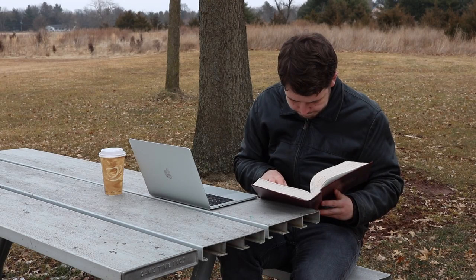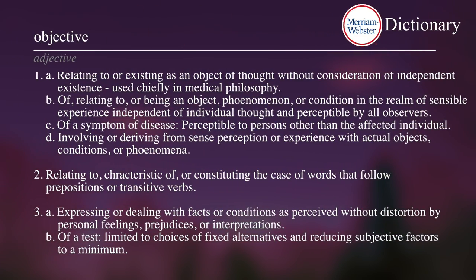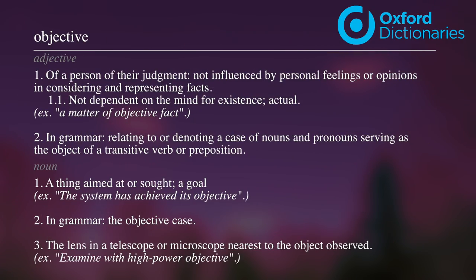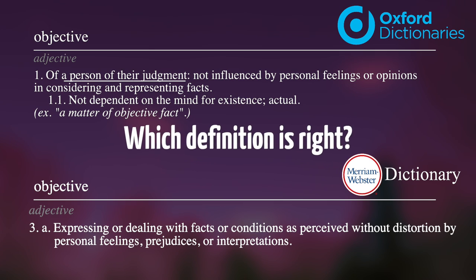Going off of that sentence alone, that would mean that according to Oxford, a partially colorblind person calling the sky purple would be making a subjective statement, but according to Merriam-Webster, he is still being objective. This discrepancy is clarified by other parts of the definition, but is nonetheless noteworthy. The Webster definition also places slightly less emphasis on the person and more emphasis on the claim. Oxford specifically states that the word objective applies to a person or their judgment. Webster doesn't mention people in their definition whatsoever. So which definition is right?